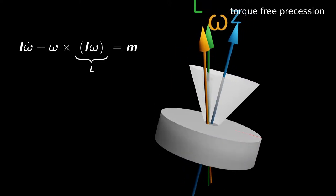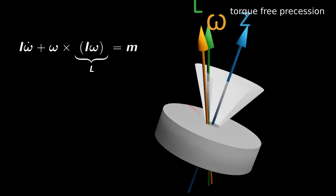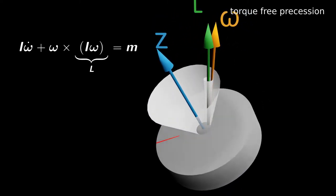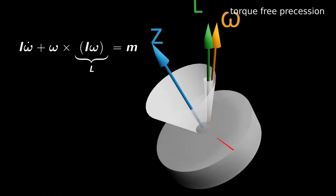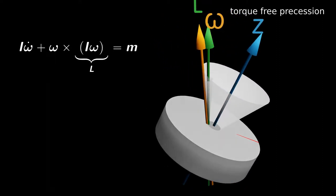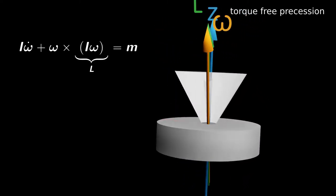This simulation shows the free precision of a thin disc. It was created by solving Euler's rotation equation. L is the angular momentum vector. Omega is the rotation vector. And that denotes the figure axis. All three axes are in one plane.